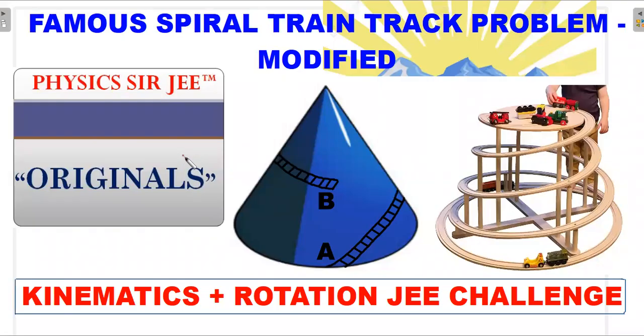Welcome back to the channel Physics Sir JEE, and here we are in Physics Sir Originals. I have brought forward to you a modified version of a very famous spiral train track problem. It's actually called a spiral train track problem on the internet, but I would say that it is more of a path on a cone which is helical. Spiral is the word that is usually reserved for a planar structure.